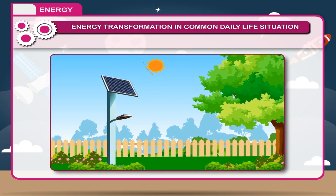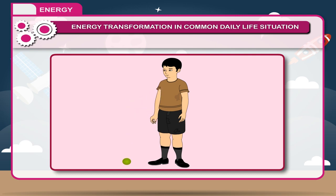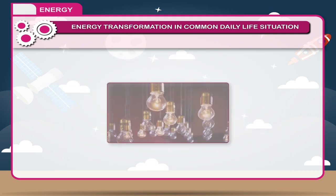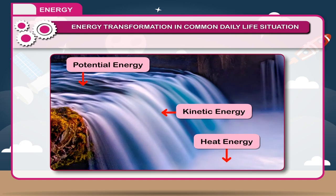According to the law of conservation of energy, energy can neither be created nor destroyed, but it can be transformed from one form to another. The change of one form of energy into another is known as transformation of energy. When a body is released from a height, its potential energy is gradually transformed into kinetic energy. The reverse happens when a body is thrown upwards. In an electric bulb, electrical energy is converted into light and heat energy. When water falls from a height, the potential energy of water is converted into kinetic energy.